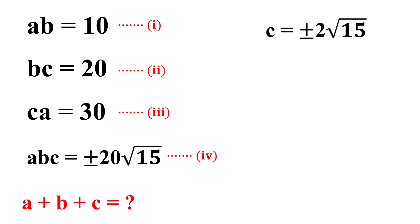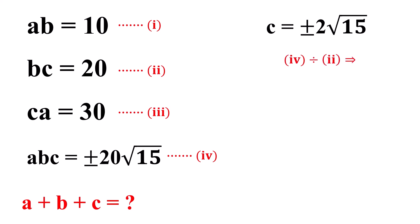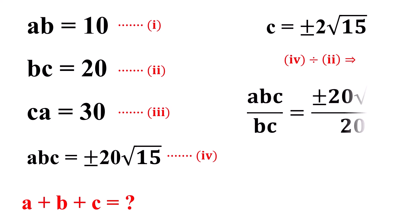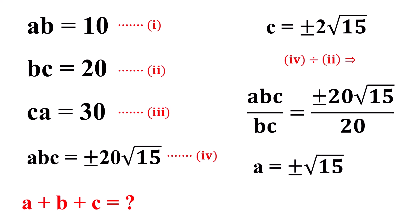Similarly, dividing equation 4 by equation 2, we get ABC over BC equals plus or minus 20 times the square root of 15 over 20. Or, the value of A equals plus or minus the square root of 15.